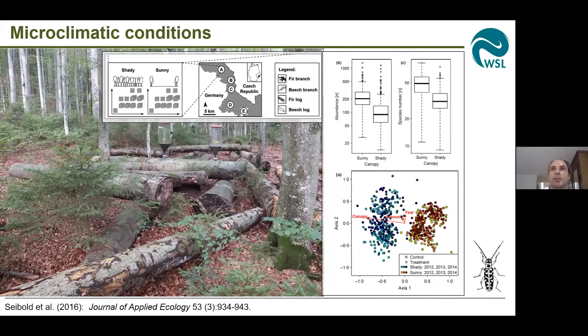The third pathway concerns microclimatic conditions. This is another experiment in the Bavarian forest, where beech and fir logs were exposed under shady and sunny conditions. It turned out that microclimate is the major driver of the composition and diversity of saproxylic species in this experiment. The abundance as well as the species richness of saproxylic beetles is higher under sunny conditions, and we find a very distinct community under sunny conditions compared to shady conditions. Canopy openness was the main driver of community composition, and because we have different communities under shaded and sunny conditions, it is important to provide both sunny and shaded habitats in our forests.